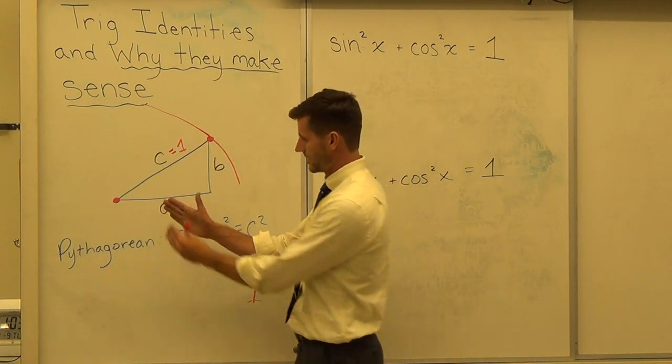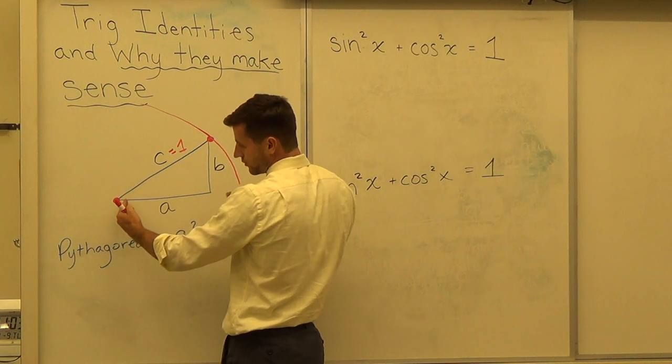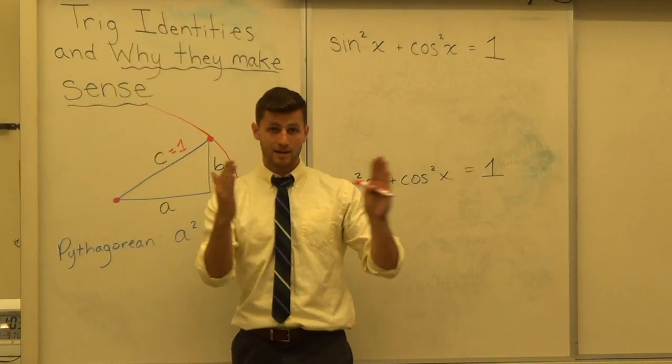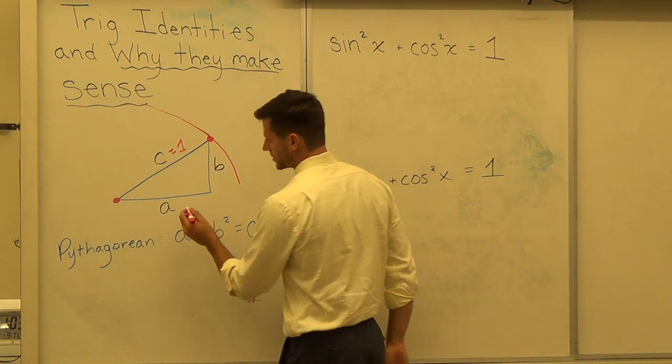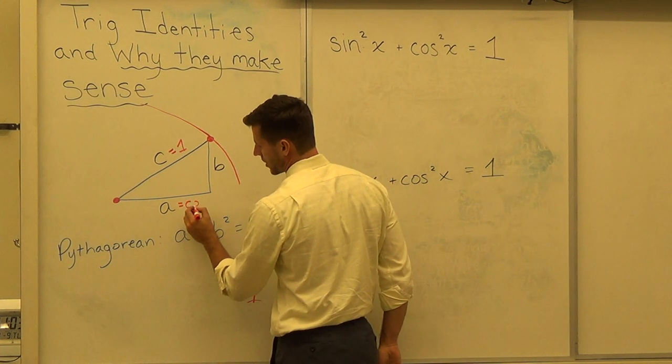Well what is A? A is how much I move to the side. And how much we move to the side is our cosine, our adjacent value. So A equals the cosine.